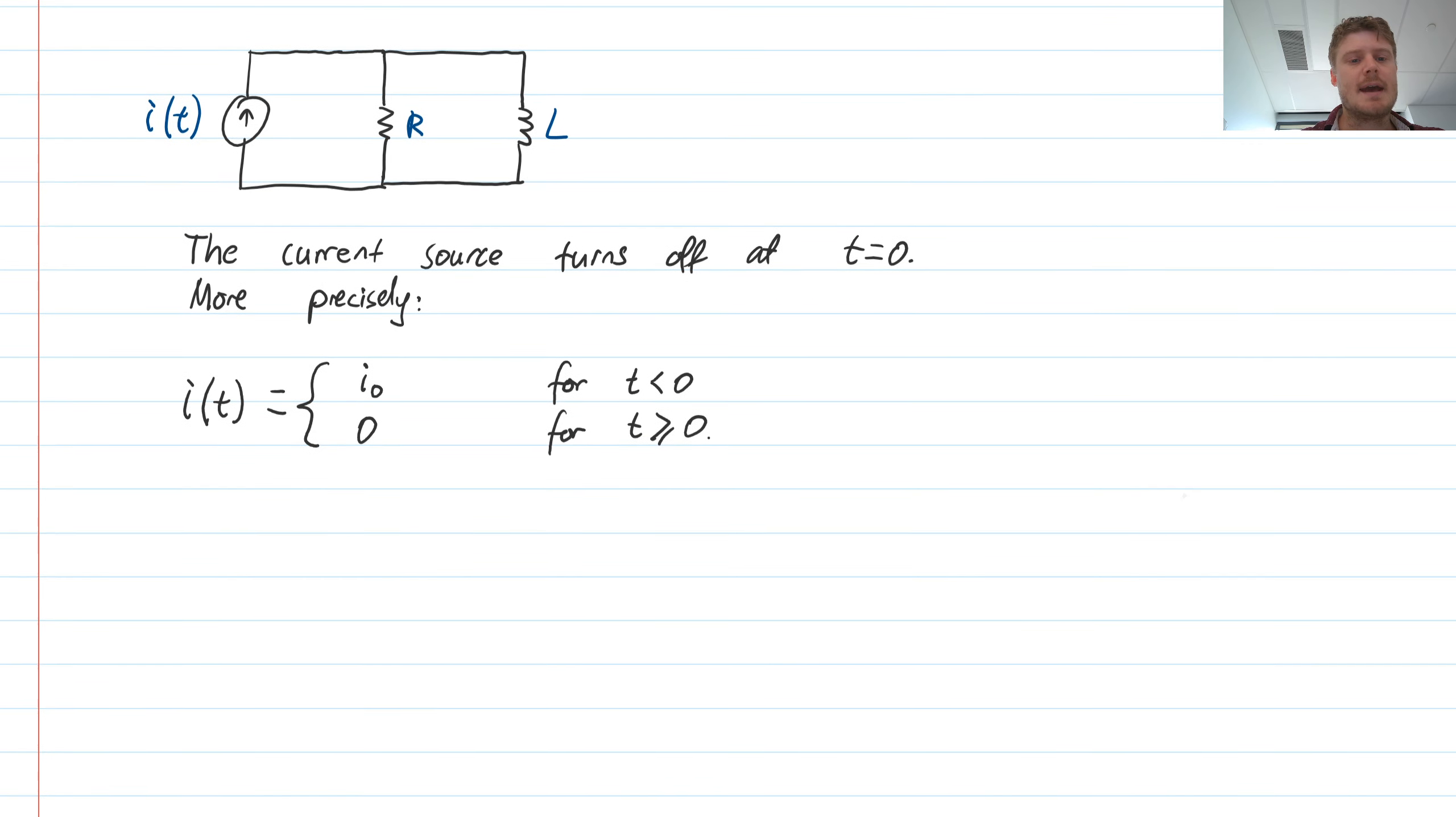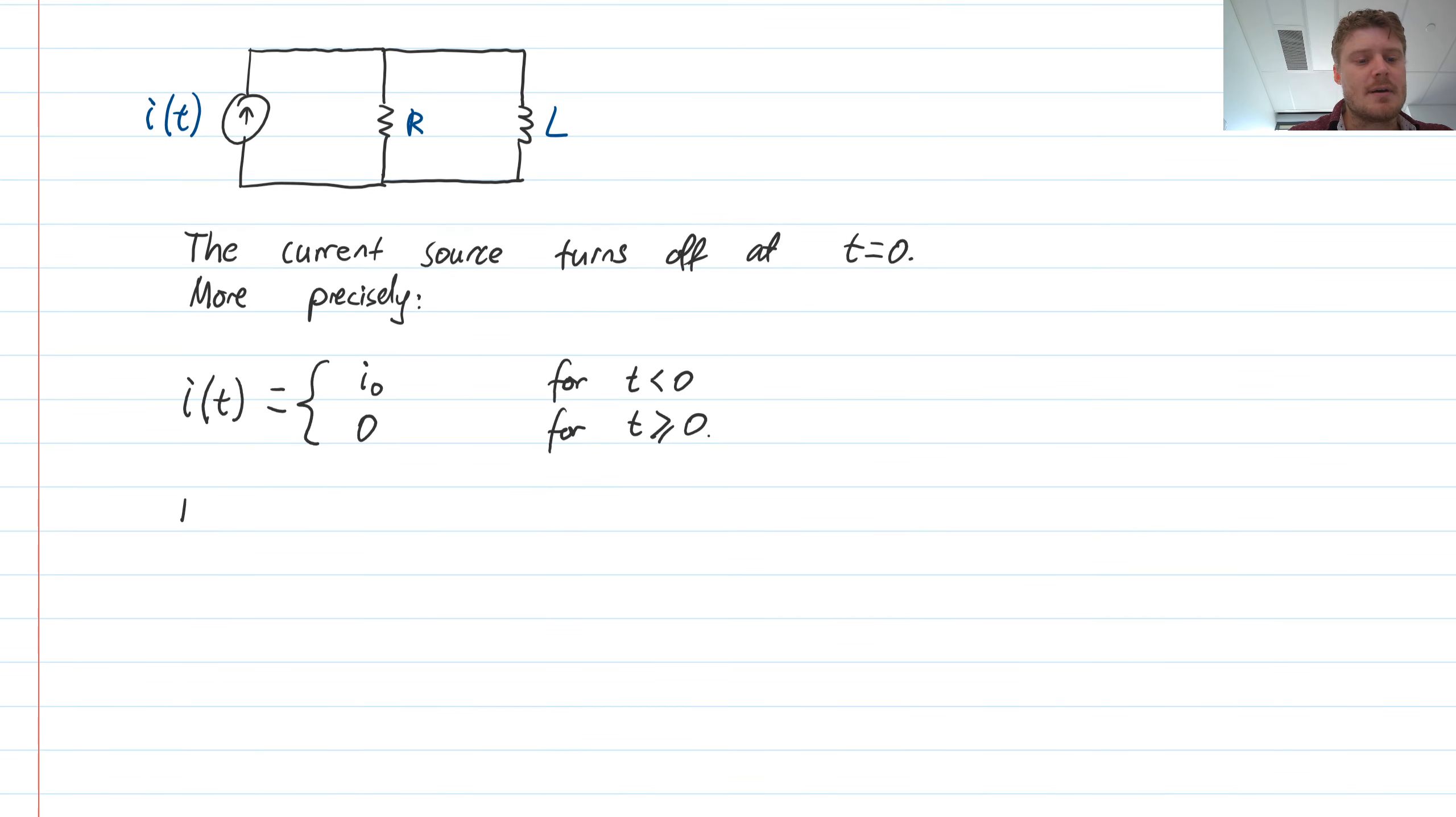So looking at the initial condition, so initially, we need to analyze the steady state behavior for i of t, the current supplied by our source, equal to just some number i0.